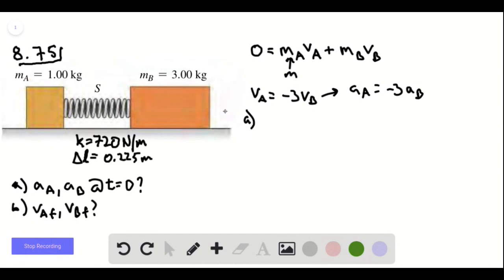So right when the blocks are released, there's going to be a force of k delta l applied to each of them. And each of them are getting the full force, because if this one weren't feeling a force that's equal and opposite to the one this is feeling, then the spring would be accelerating in one direction or another at the beginning of the problem. And we know that's not happening.